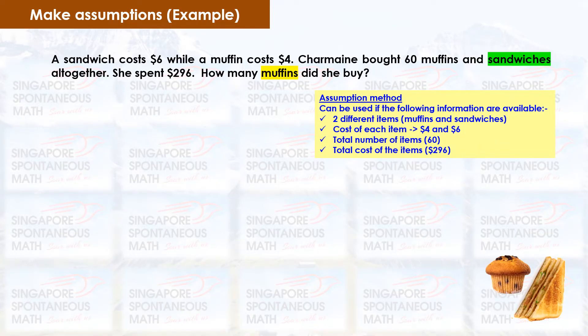The Assumption Method can be used if the following information are available: two different items — muffins and sandwiches; the cost of each item — $4 and $6; the total number of items — 60; and the total cost of the items — $296.